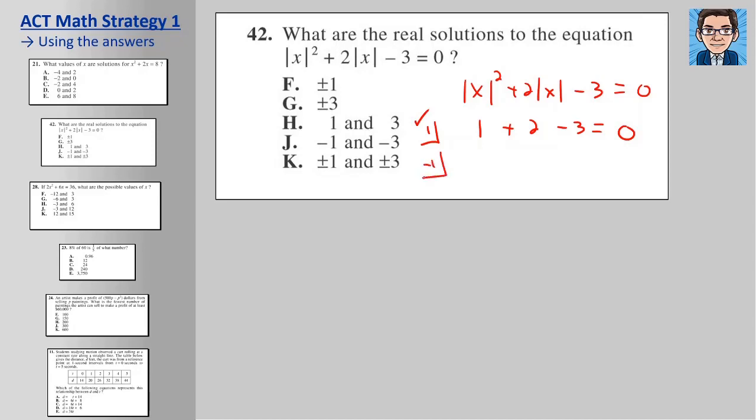Minus one. Now if you notice, the only place they have x is in the absolute value. So if you did notice that, you'd know that you're going to get the same value for negative one. But if you didn't notice that, we can just put negative one in and run through it as well. The absolute value of negative one is one. One squared is one. The absolute value of negative one is one times two gets us two minus three is zero. So both negative one and one, both are working.